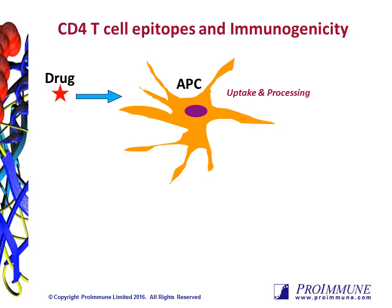Immunogenicity, or unwanted immune responses, can be a significant obstacle in the development of biological drugs. There are multiple factors that contribute to immunogenicity, and these can be described as either extrinsic or intrinsic factors. Extrinsic factors include things like the route of administration, the frequency of exposure to that drug, and the immune status of the patient receiving it.